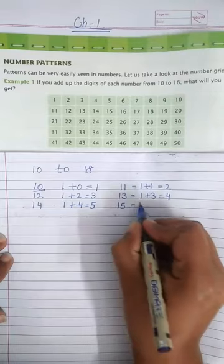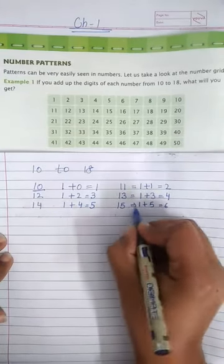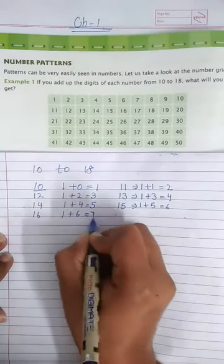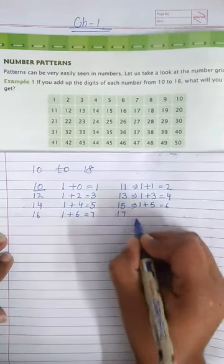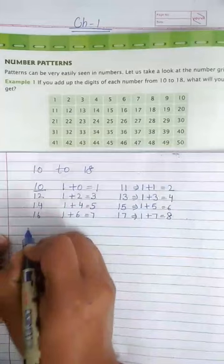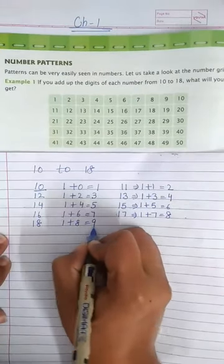15, 1 plus 5 is equal to 6. 16, 1 plus 6 is equal to 7. 17, 1 plus 7 is equal to 8. And 18, 1 plus 8 is equal to 9.